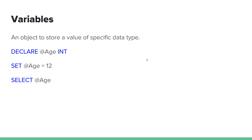Let's see what we have here. A character is a string, and the value and type are defined. For example, DECLARE is a SQL keyword. Age is a variable of type integer. You use SET to assign age equals 12.